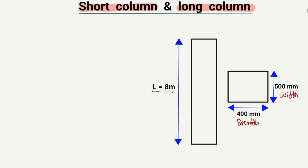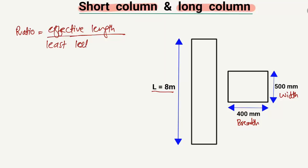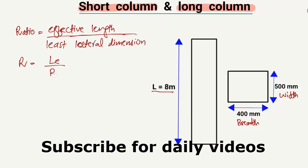To differentiate whether this is a short column or a long column, we use a ratio r. The ratio r is equal to the effective length of the column divided by the least lateral dimension, represented as le divided by b.